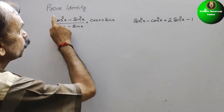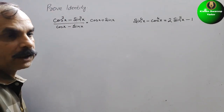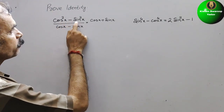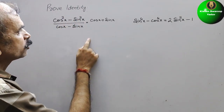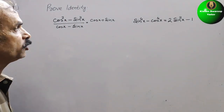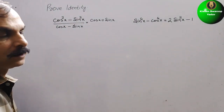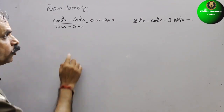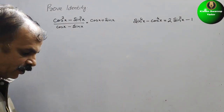Your question is proof of identity. See what they have given: cos squared x minus sin squared x, divided by cos x minus sin x, is equal to cos x plus sin x. First we will solve this. Here it is LHS.